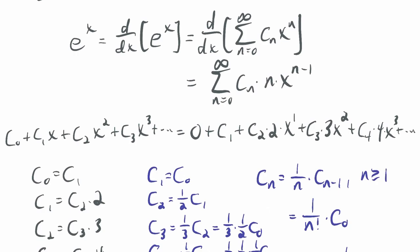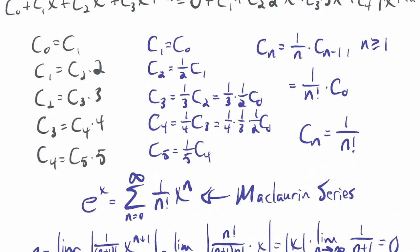That's just our first example. We're not going to go through this procedure for all of them — I just wanted to show that you can do this, and specifically to motivate the presence of the factorial. Where does that come from? This one example shows it clearly.